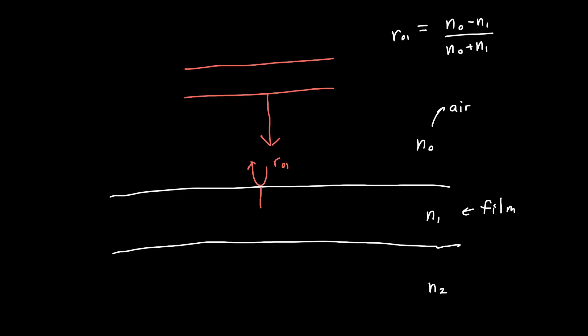But that's not the end of the story, because some of our wave gets transmitted. We know that amount too: it's t01. Rather than writing t01 in terms of refractive indices, I'm going to write it in a more convenient form: it's just 1 + r01, which you can derive from the math or from boundary condition arguments on the electric field. As the wave travels from the front interface to the back interface, it picks up a phase that depends on the film thickness L.